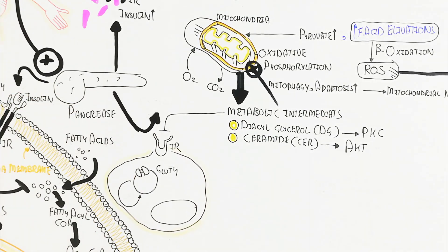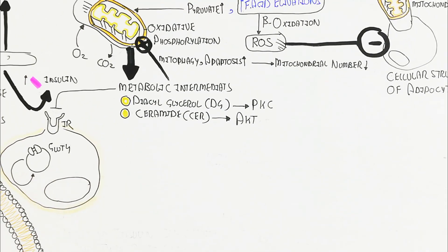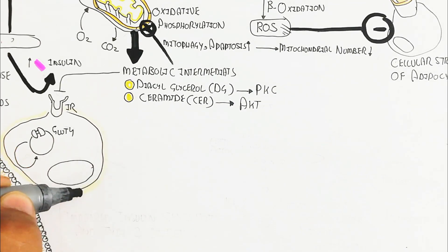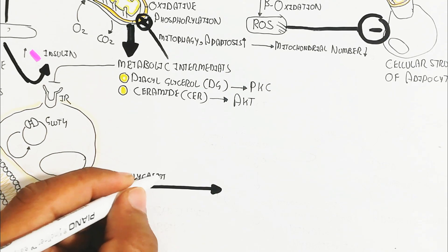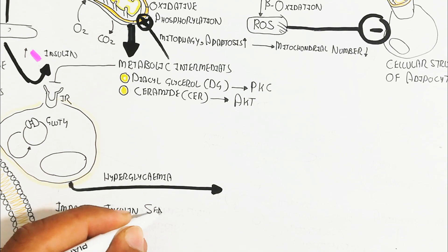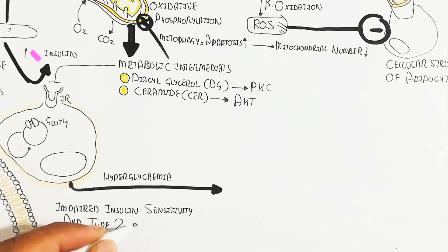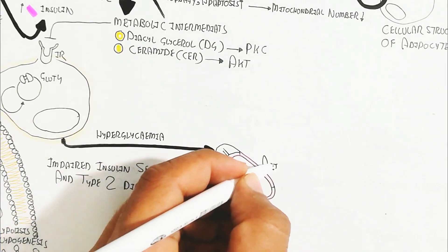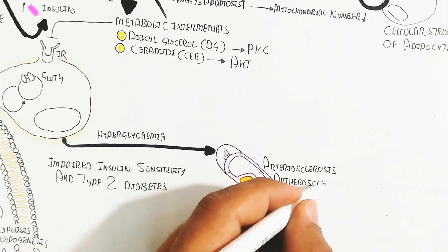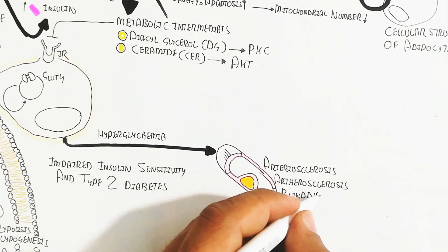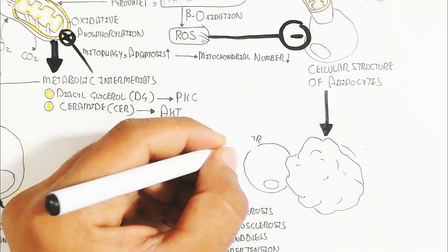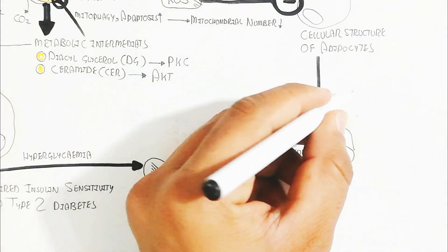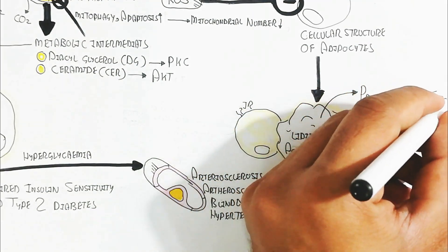Insulin resistance occurs due to insulin receptor dysfunction caused by metabolic intermediates. The GLUT4 channel is no longer activated, leading to hyperglycemia and type 2 diabetes. Impaired insulin sensitivity and type 2 diabetes result from increased hyperglycemia and insulin receptor resistance. This further leads to complications such as arteriosclerosis, blindness, hypertrophy, and many more diseases — which is why obesity is a central disease process linked to diabetes.